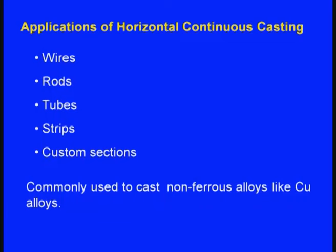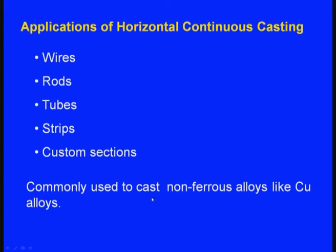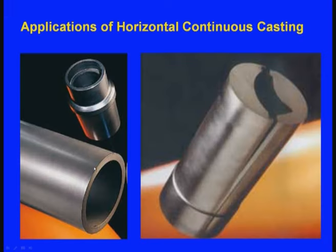Applications of horizontal continuous casting: making of thin wires, rods, tubes, strips, and custom sections. It is commonly used to cast non-ferrous alloys like copper alloys. These are the typical components produced by horizontal continuous casting.